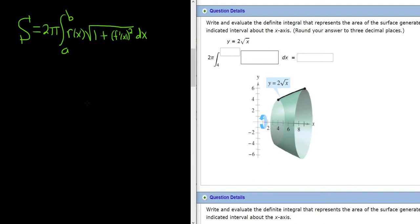So in all of this, r is the distance from your function to the axis of revolution. In this case, r of x is simply the same as f of x. It's just 2 square root of x. f of x is also 2 square root of x.